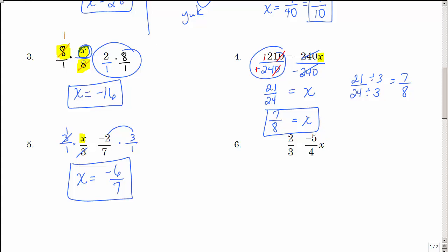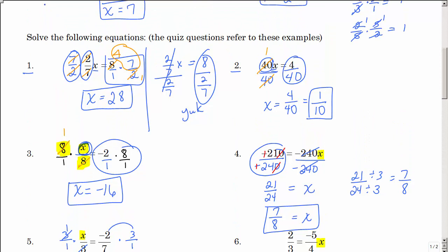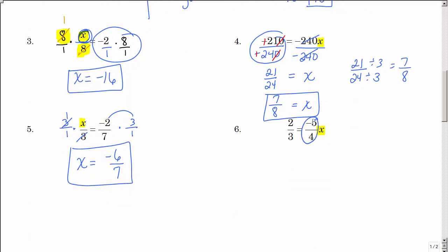Let's look at number 6. Look at x and ask yourself: what is happening? x is being multiplied by negative 5 fourths. Going back to the first example — x was being multiplied by 2 sevenths and I undid that by multiplying both sides by that reciprocal. I'm going to do the same on number 6. It's being multiplied by negative 5 fourths, so I'm going to multiply both sides by negative 4 fifths. Those cancel out — negative times negative becomes positive, giving 1x. Multiplying across gives negative 8 over 15.